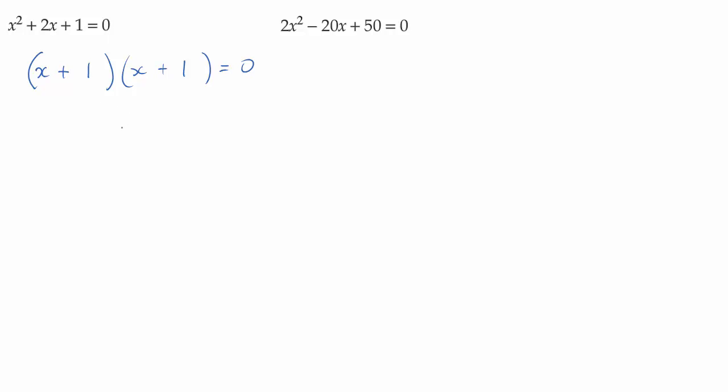Now we know from our null factor law that one of these has to be equal to zero in order for the whole thing to be equal to zero. So basically what we're saying is that x plus one must equal zero. So x must equal minus one when we rearrange that.